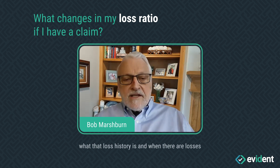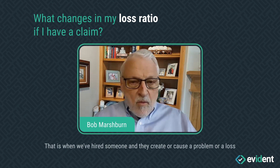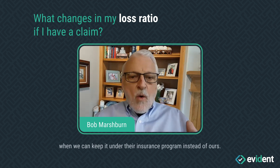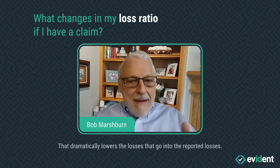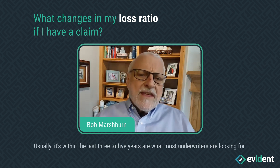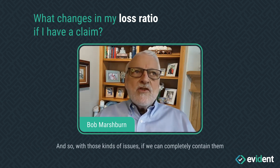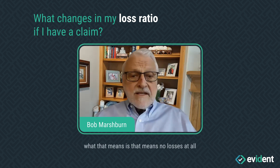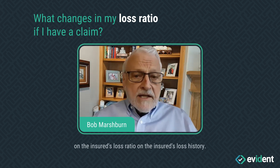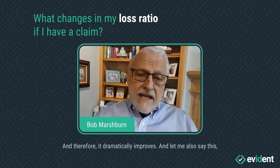When there are losses specifically arising out of third-party losses — that is, when we've hired someone and they create or cause a problem or a loss — when we can keep it under their insurance program instead of ours, that dramatically lowers the losses that go into the reported losses. Usually the last three to five years is what most underwriters are looking for. So if we can completely contain those losses and keep them with the insurance companies of the third parties, that means no losses at all on the insurance loss history, and therefore it dramatically improves the loss ratio.